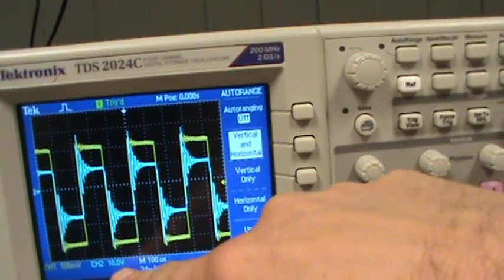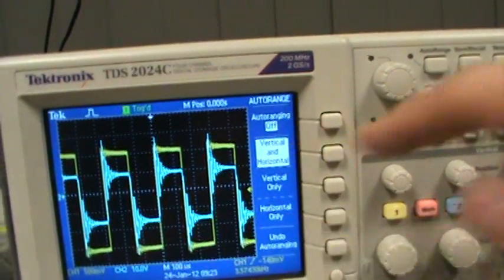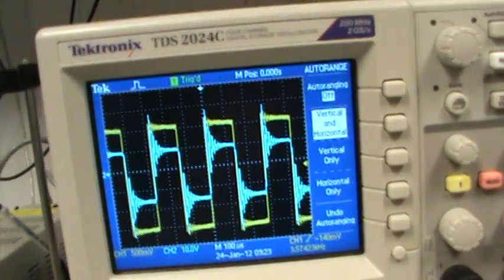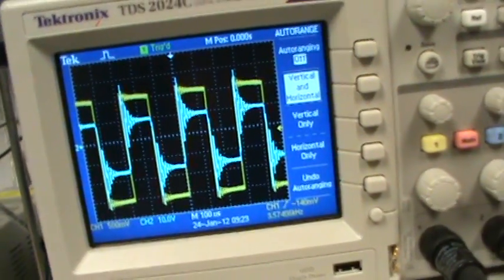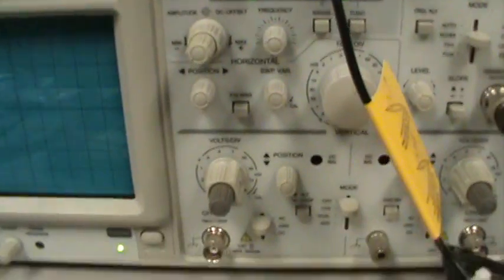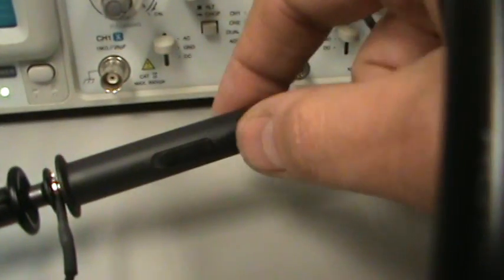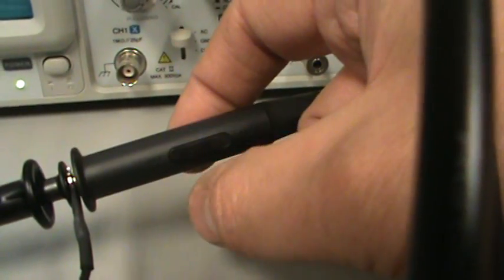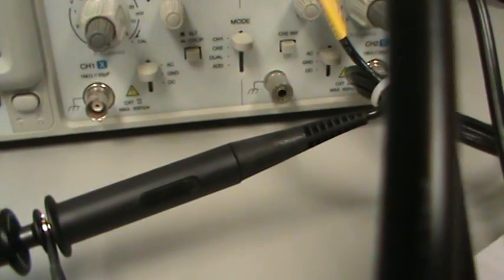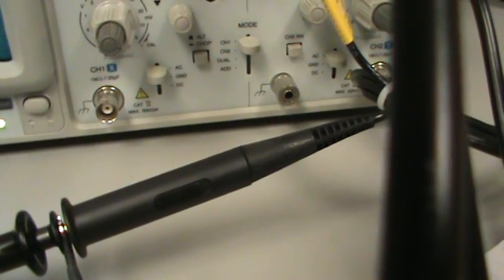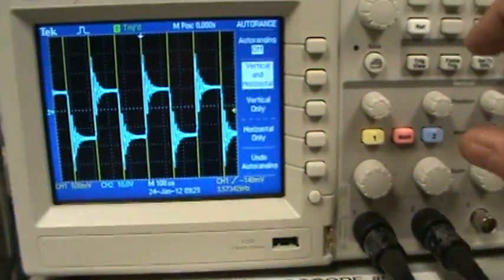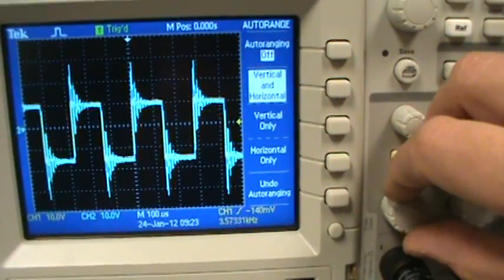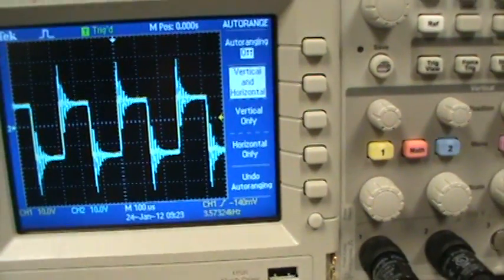And so channel 2 is 10 volts, channel 1 is 500 millivolts. And the reason we have the difference is on the probe. So if you look down here on the probe, there's a switch here, 10 times probe and 1 times probe. You want to make sure that the probe setting on the oscilloscope is the same as the probe. So now this probe is at 1. And then on the oscilloscope, now the oscilloscope is set to 1.